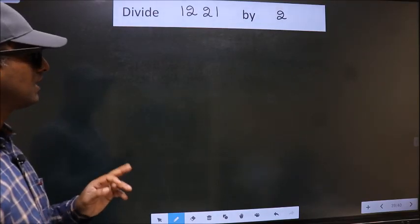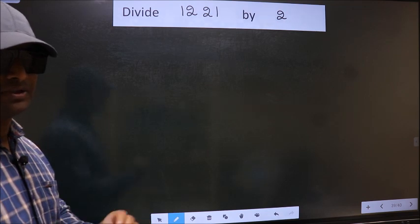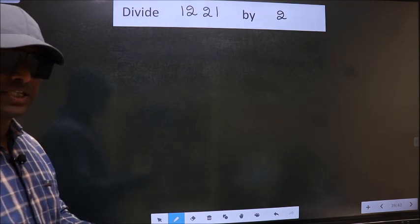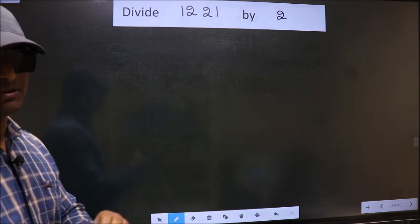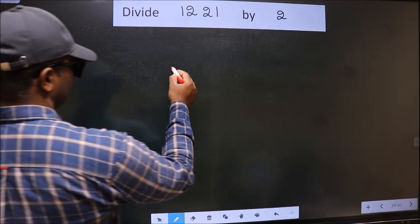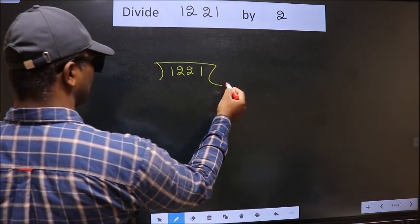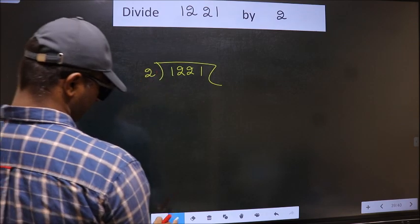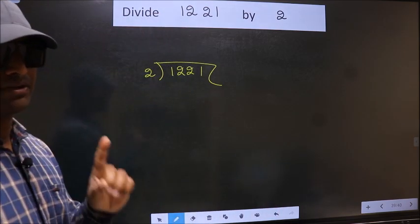Divide 122.1 by 2. While doing this division, many do this mistake. What is the mistake that they do? I will let you know. But before that, we should frame it in this way. 122.1 and 2 here. This is your step 1.